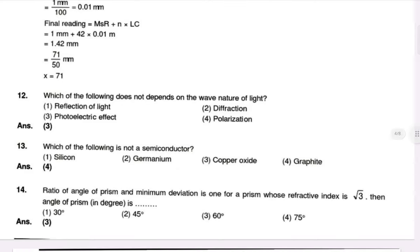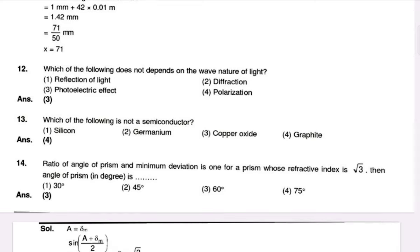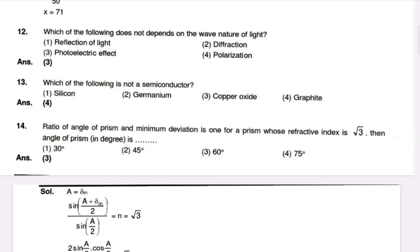Which of the following does not depend on the wave nature of light? The photoelectric effect depends on the particle nature, not the wave nature of light. Which of the following is not a semiconductor? Silicon, germanium, copper oxide, and graphite — graphite is not a semiconductor.